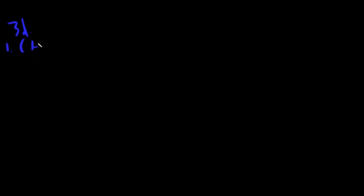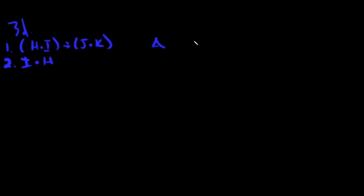Now let's look at number 3d. Line one: '(h dot i) arrow (j dot k)' — assumption number one. Line two: 'i dot h' — assumption number two. We're solving for just 'j' by itself.